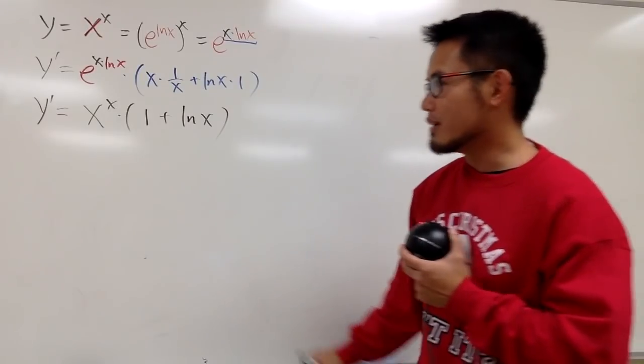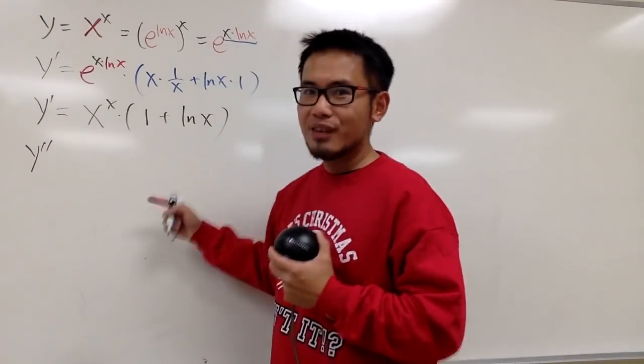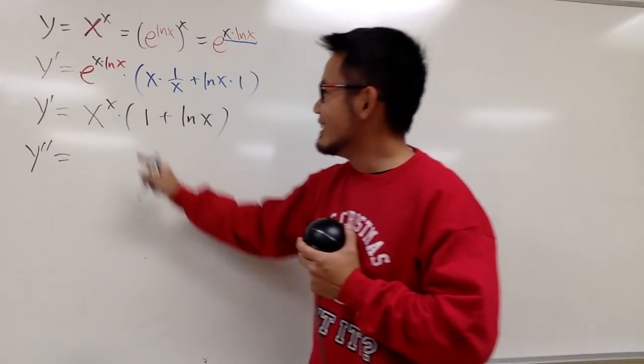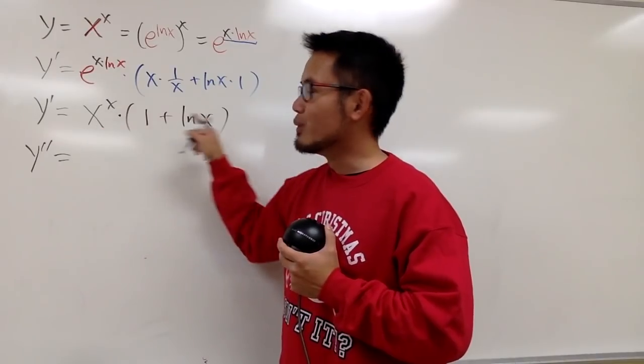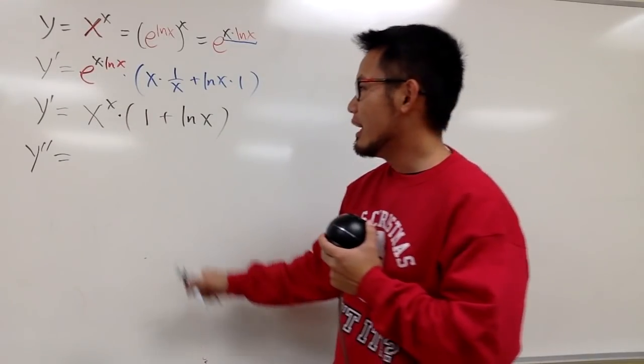Now, moving on to the second derivative. Of course, we have to look at the first derivative and differentiate this. Notice, this is a product of two functions. So, we have to use the product rule.